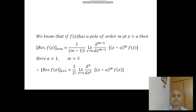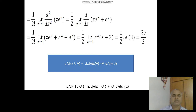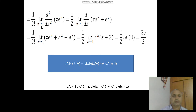Substituting f of Z, we get (Z minus 1)³ times Z e^Z over (Z minus 1)³, which simplifies to Z e^Z. So the expression becomes 1 by 2 factorial into limit Z tends to 1 of the second derivative of Z e^Z.